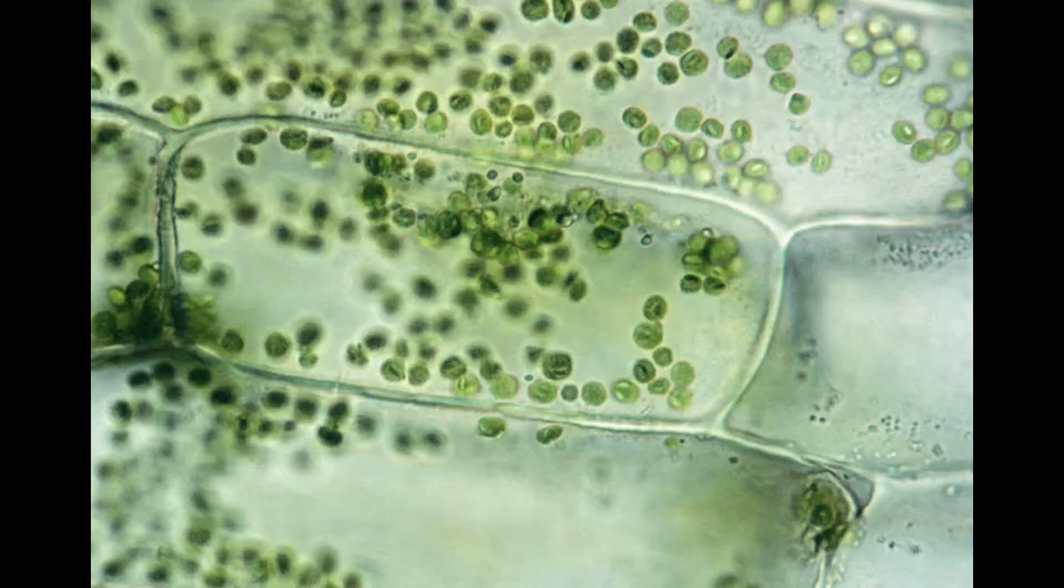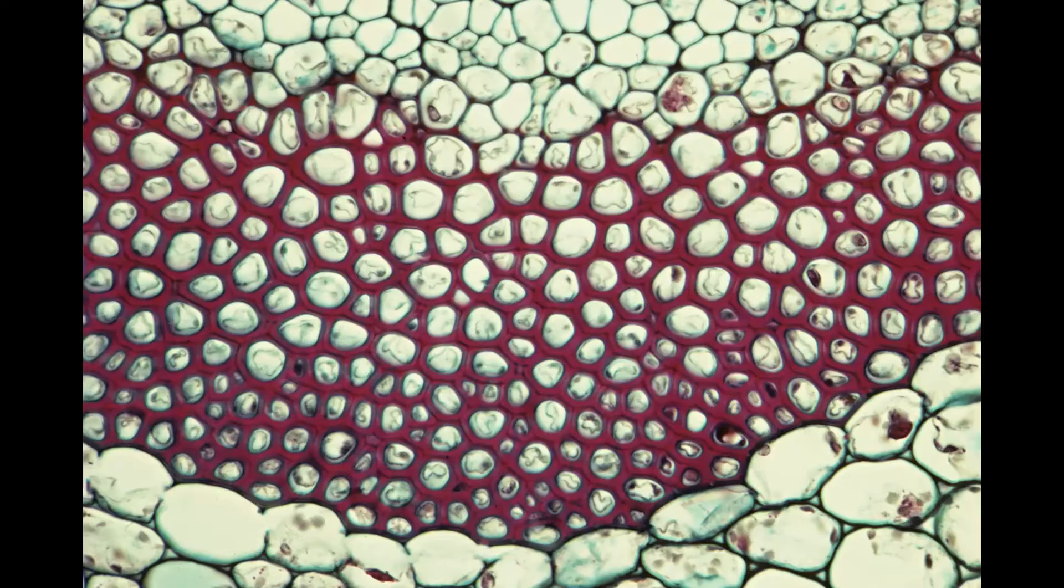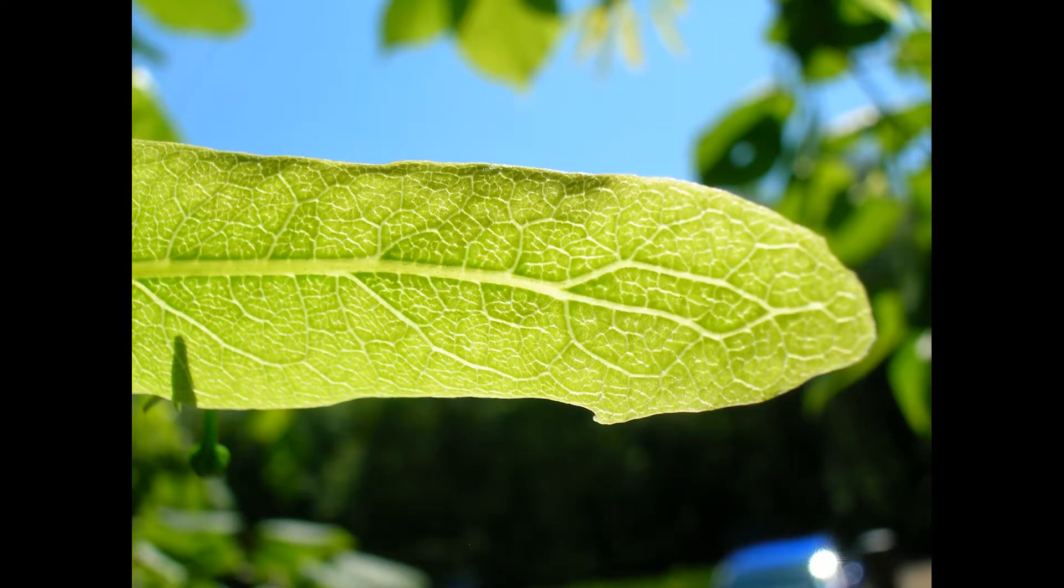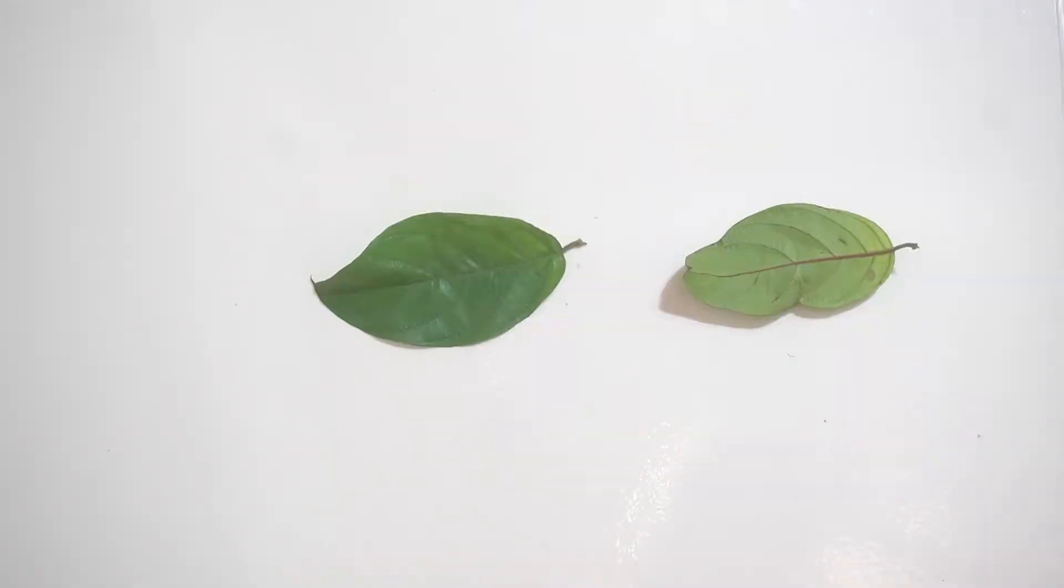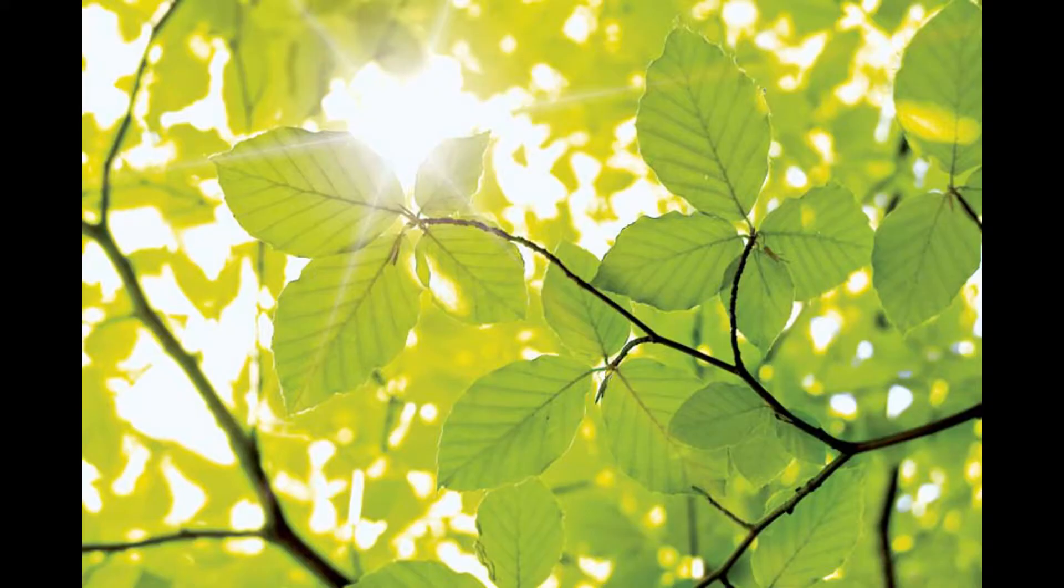And the cells in the leaf look like the bricks of a building because of their shape. It is in the cells where food is made, and in order to make the cells exposed to the sun, we have the veins.